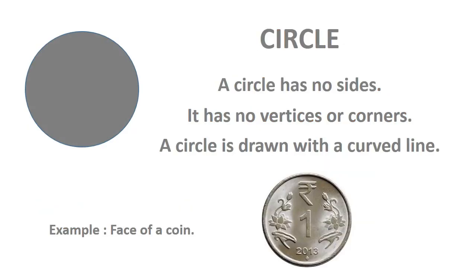A circle has no sides. It has no vertices or corners. A circle is drawn with a curved line. Example: face of a coin.